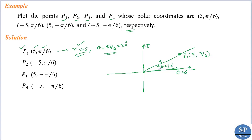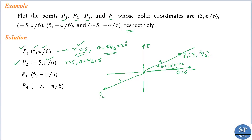That means a rotation in the anti-clockwise direction. Next, to plot P2, we know P2 is the point (−5, π/6), that is r equal to −5 and θ equal to π/6, which is 30 degrees. Since the angle is still π/6 but r is negative 5, we consider the point at a distance 5 units from the origin in the opposite direction. So this will be the point P2: (−5, π/6).